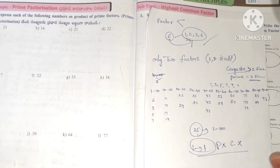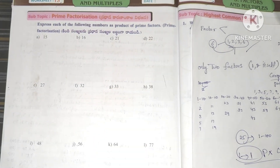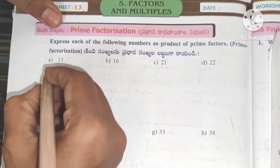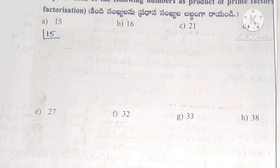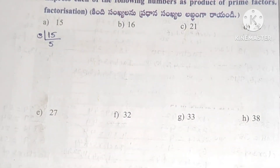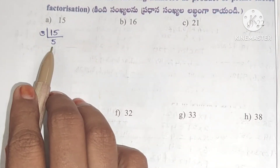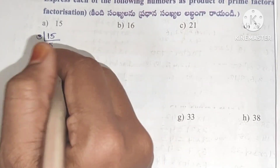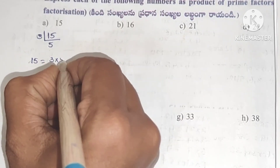Now, express each of the following numbers as a product of prime factors — write the prime factorization. For 15, the first prime number is 2, but 15 is not divisible by 2. So we try 3: 3 fives are 15. So we keep the list 2, 3, 5, 7 in mind. Prime number 5 is prime, so we stop. Prime factorization of 15 is 3 into 5.